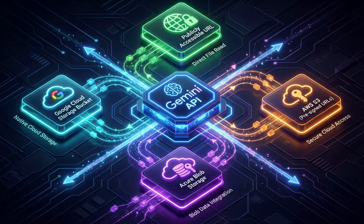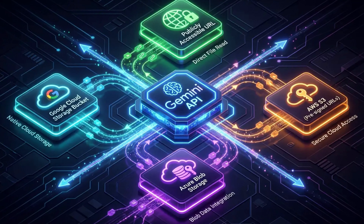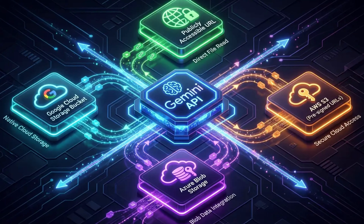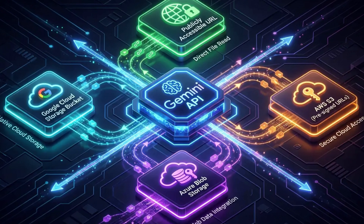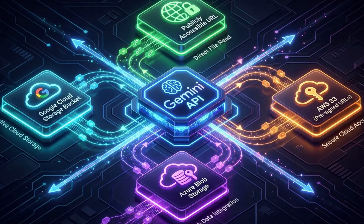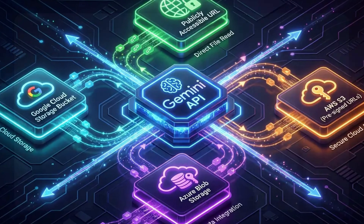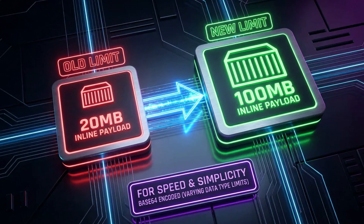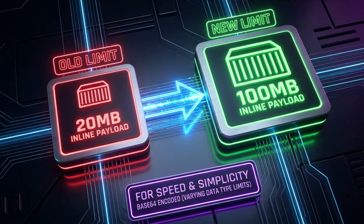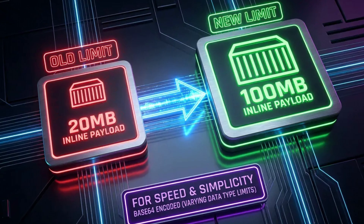All of that is going to change now with this new update. Gemini API can now directly read files from your cloud storage, whether it is a GCS bucket or an AWS or an Azure bucket. That is one of the main updates that this particular release has. Outside of that, they've also changed some of the limits when it comes to uploading documents.